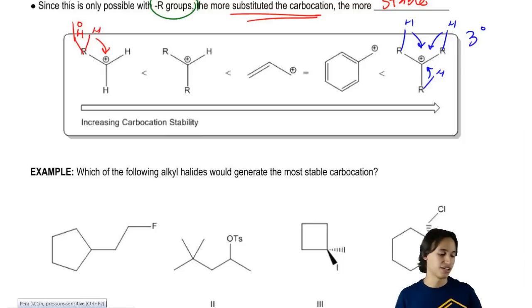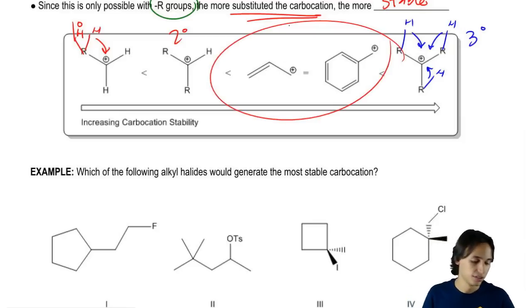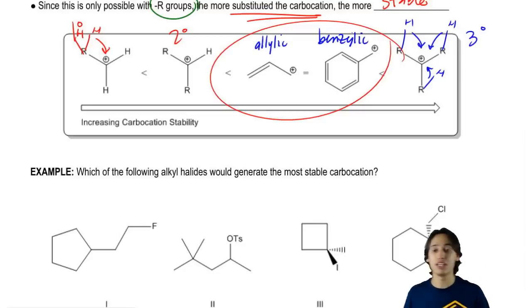Then in between we have other ones like secondary and then these guys here. These are actually going to be ones that can resonate. This is called allylic and this is benzylic. Allylic just means next to a double bond. Benzylic means it's next to a benzene.